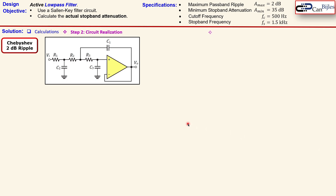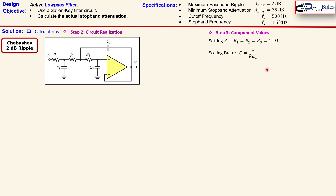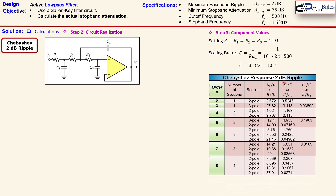Now for the Chebyshev response calculations: we use a different table specifically for 2 dB Chebyshev ripple. We again set R1 = R2 = R3 = 1 kΩ and the scaling factor C is exactly the same as for the Butterworth case. This Chebyshev table is completely different because it allows for ripple in the gain plot, which in turn results in a lower required filter order of three versus four.